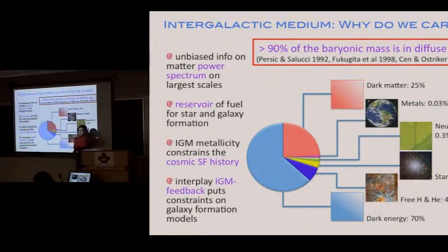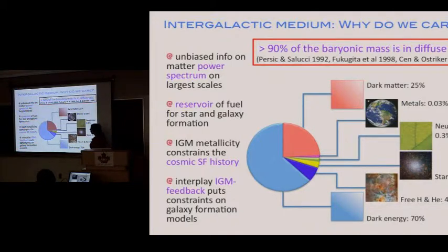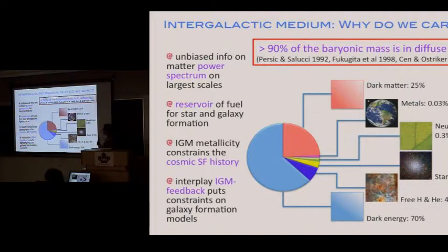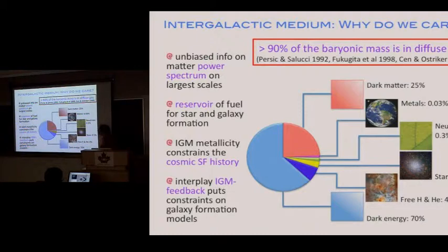There are several reasons to care about this mass. If we can measure its distribution, we get information about the power spectrum of density fluctuations in the universe and their evolution from redshift 6 down to redshift 0. Being the main reservoir of gas from which stars and galaxies form, studying it gives us information about galaxy formation. Studying the metallicity of the IGM also puts strong constraints on the cosmic star formation history and on feedback processes — especially supernova feedback, though AGN feedback can also be constrained.